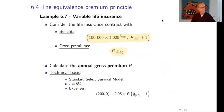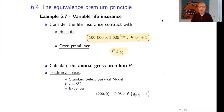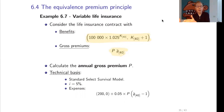Example 6.7 is a variable life insurance contract where the payment at death changes over time. The benefits are: at the end of the year of death of a 40-year-old, the payment is 100,000 adjusted by 2.5% per year. So if the person dies in the first year he gets 100,000; if in the second year he gets 100,000 times 1.025; if one year later there is again a 2.5% growth applied to the payment.